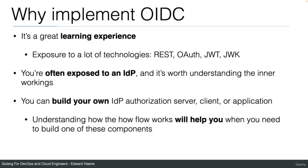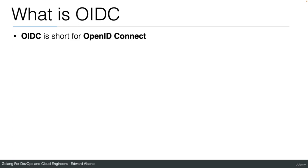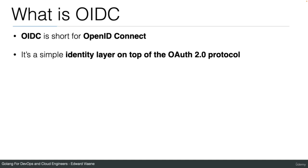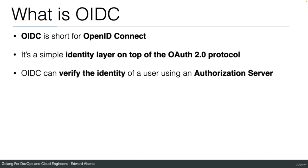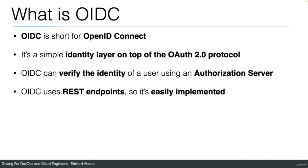Understanding how the flow works will help you when you need to build one of these components. OIDC is short for OpenID Connect. It's a simple identity layer on top of the OAuth 2.0 protocol. OIDC can verify the identity of a user using an authorization server, and it uses REST endpoints, so it's easily implemented using GET and POST with JSON.